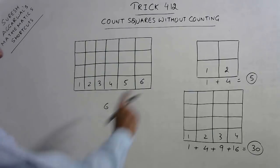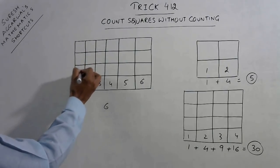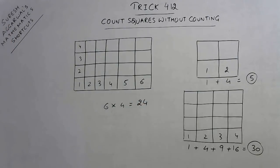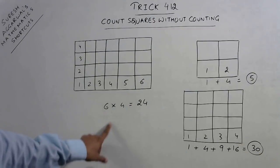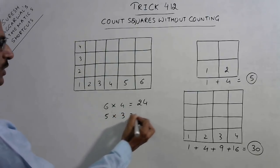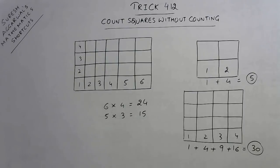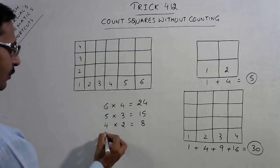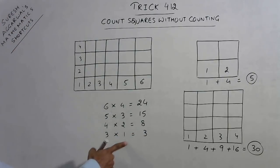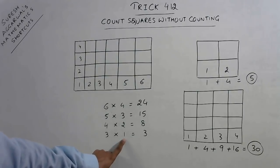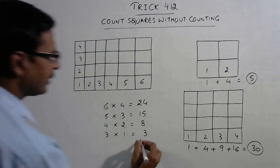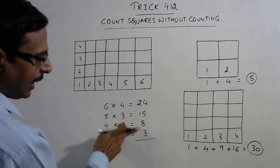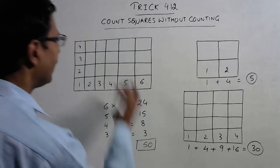You have 6 squares in the bottom row and 4 squares vertically. Just multiply these two numbers to get 24, then keep reducing both numbers by 1: 6 becomes 5, 4 becomes 3, giving 15. Then 4 becomes 3 and 2 gives 8. Then 3 becomes 2 and 1 gives 3. One more step would make one factor 0, so stop. Add all products: 24 + 15 + 8 + 3 = 50. The total number of squares in this figure is 50.